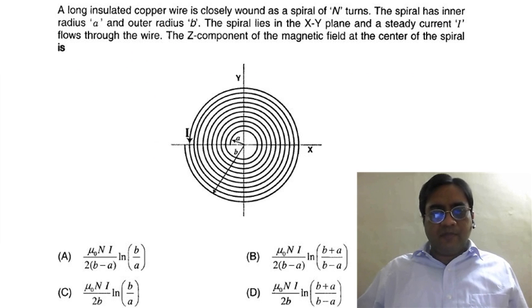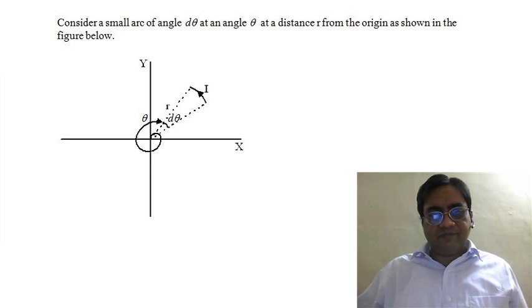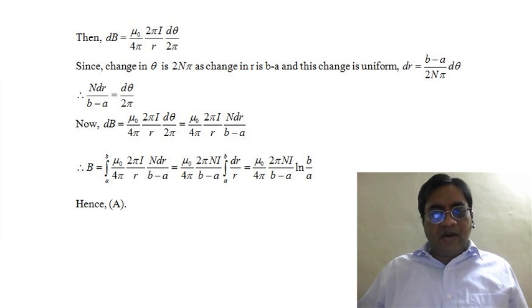Now, r changes from small a to small b, that means change in r is b minus a. So when r changes by b minus a, theta changes by 2Nπ. Using the unitary method we get this as the relationship between dr and dθ which was required for us to be able to integrate this.